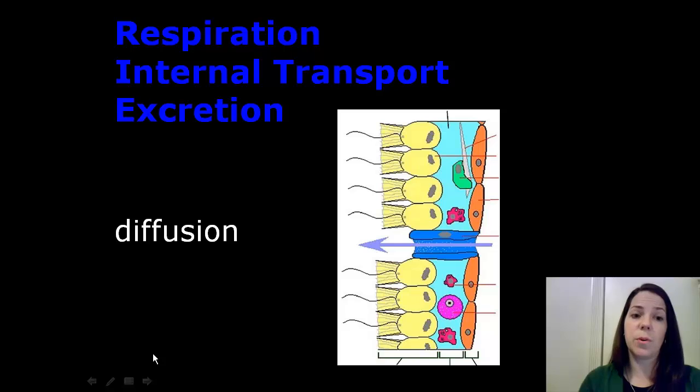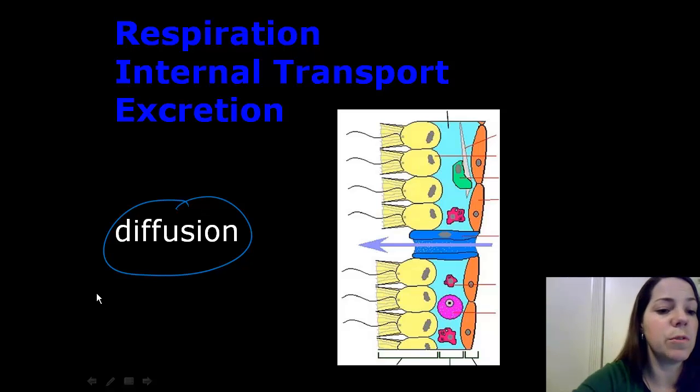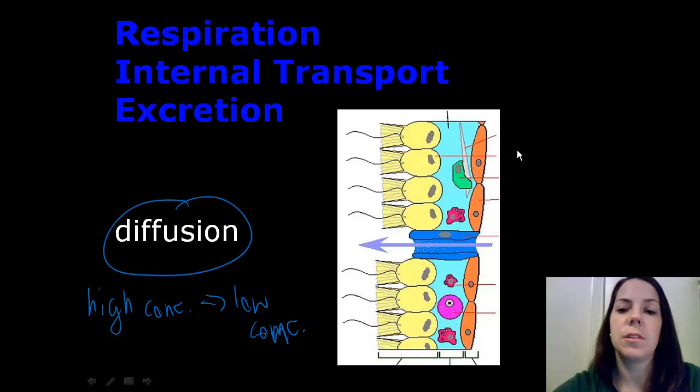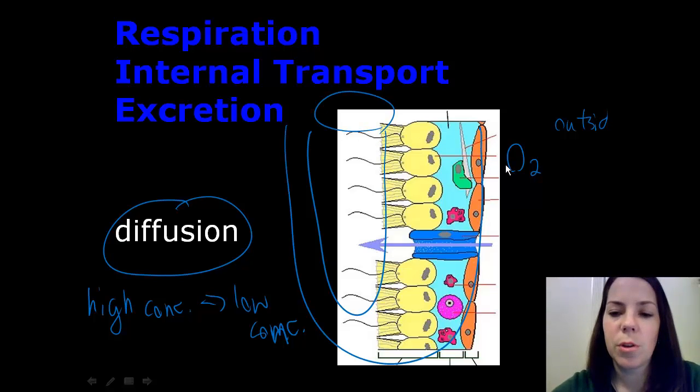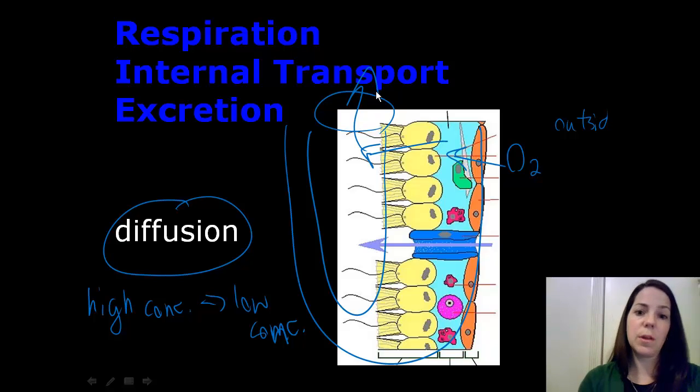Respiration, internal transport, and excretion all occur through diffusion. Now diffusion is the movement of particles from a high concentration area to a low concentration area. So oxygen diffuses from outside the sponge. Now you have to imagine the sponge is shaped like this, and this is the osculum at the top. So the oxygen diffuses into the sponge. The carbon dioxide and the ammonia diffuse out into the spongocele, or the inner cavity of the sponge, and then are excreted out through the osculum through the pumping of the water by the flagella. Okay,